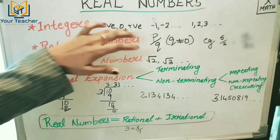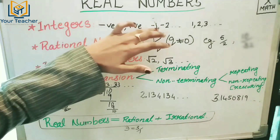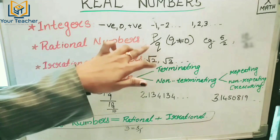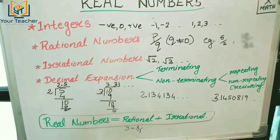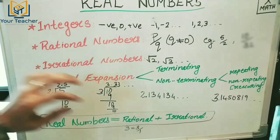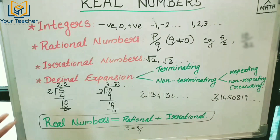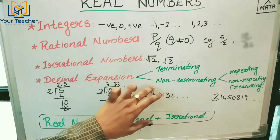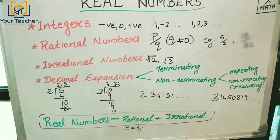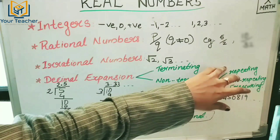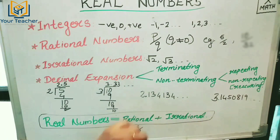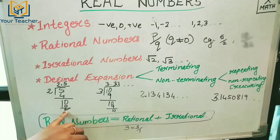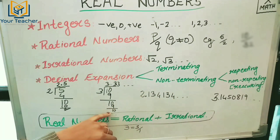Integers include negative, positive, and zero. Rational numbers are in P by Q form. Irrational numbers cannot be written as P by Q. Decimal expansion is of two types: Terminating — where the remainder is zero — and Non-Terminating — where the remainder is not zero.